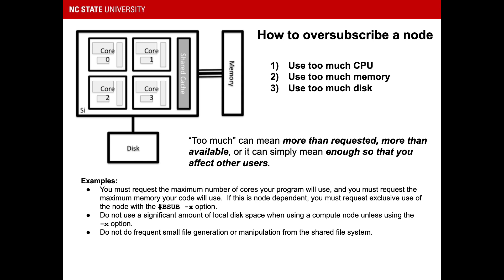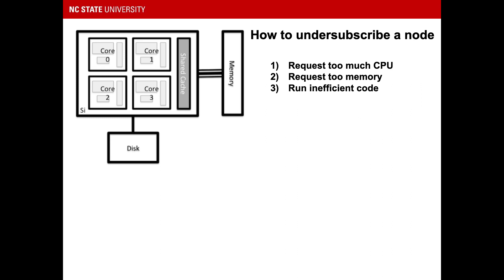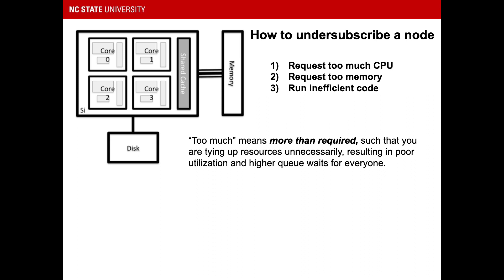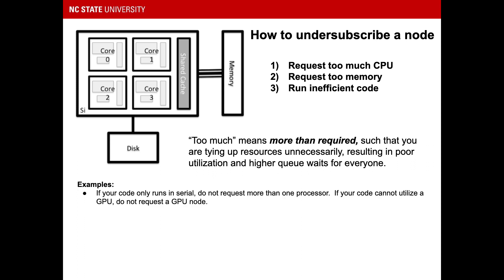Do not frequently generate or manipulate hundreds of small files from the shared file system. You can undersubscribe a node by using too little of any of the resources — and you do this by requesting too much CPU or too much memory, or by running inefficient code. In this case, too much means more than required, tying up resources unnecessarily and resulting in poor utilization and higher queue waits for everyone. For example, if your code only runs in serial, do not request more than one processor. If your code cannot utilize a GPU, do not request a GPU node. Do not request an interactive node unless you actually need to interact with a node, and do not leave nodes running idle. This includes reservations of the HPC VCL nodes.